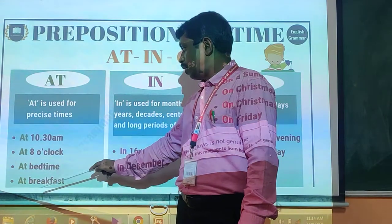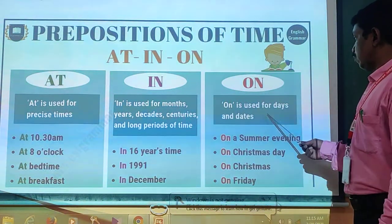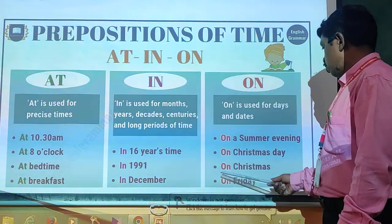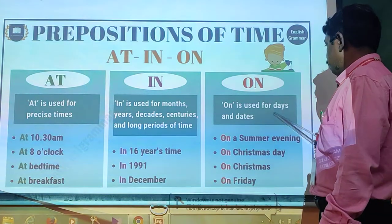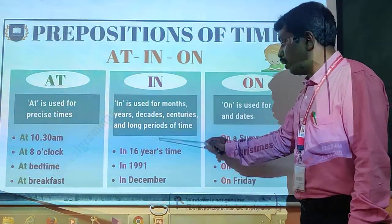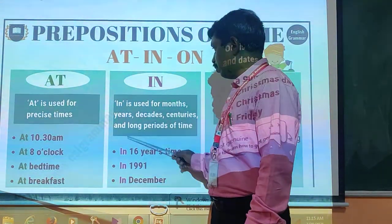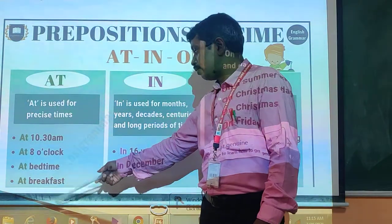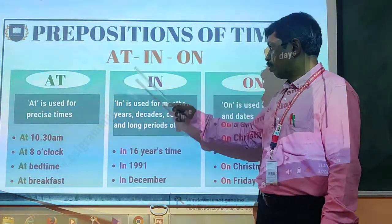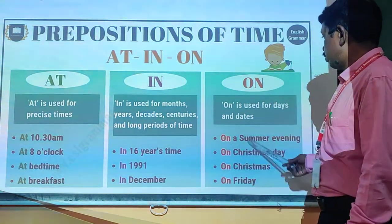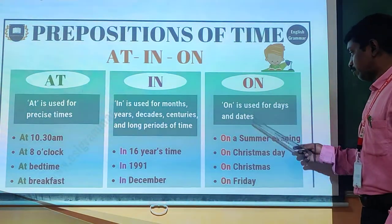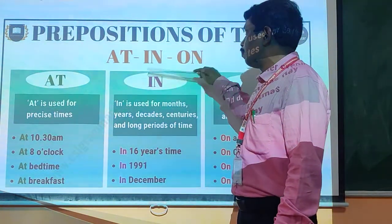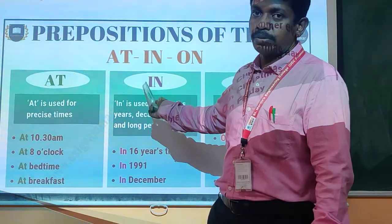'At' is used for particular time only — at 8 o'clock, at bedtime, at breakfast. Whereas 'in' is used before centuries, years, and months. And 'on' is used before days and dates — on Christmas day, on a summer evening, on Friday. These are very basic but we should not get confused. In any complicated exam, they will include this type of confusing preposition, so we should be aware of all these things.